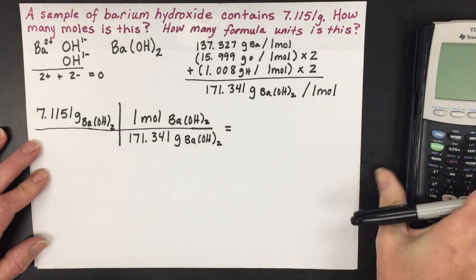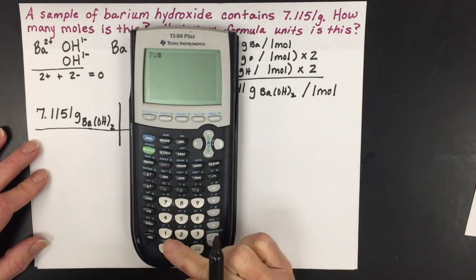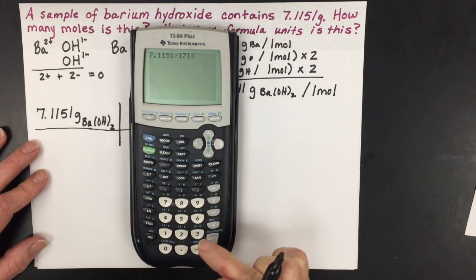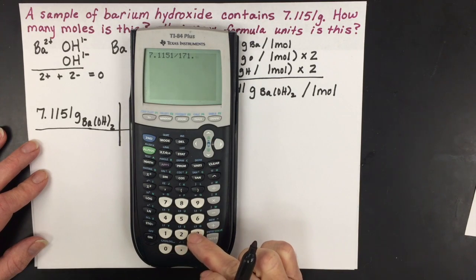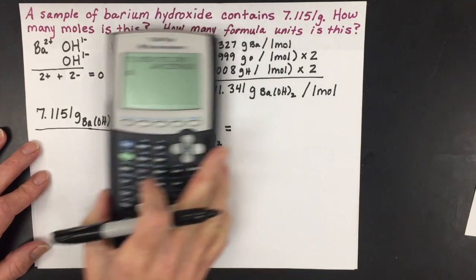This will equal, because you'll divide it on your calculator, so you'll take 7.1151 and you'll divide it by 171.341. And we get a very long answer.